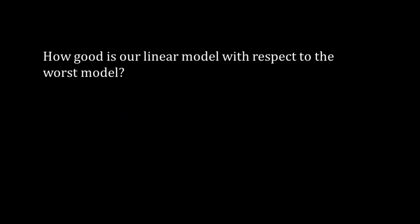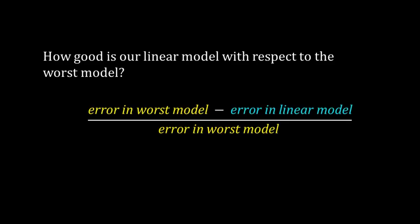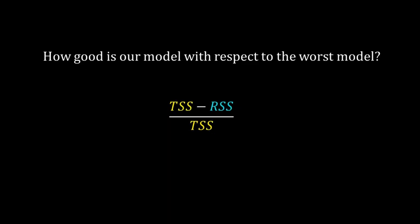Fine, we have got TSS and RSS. Now we ask: how good is our linear model with respect to the worst model? To answer this question, compare these two errors of these two models. We subtract the error of the linear model from that of the worst model and then divide that value by the error of the worst model. So we have (TSS - RSS) divided by TSS. This can be written as 1 minus RSS/TSS.